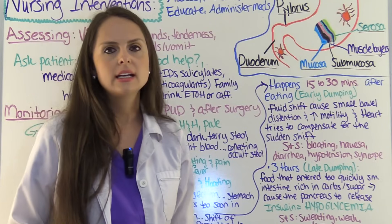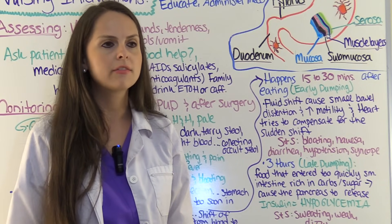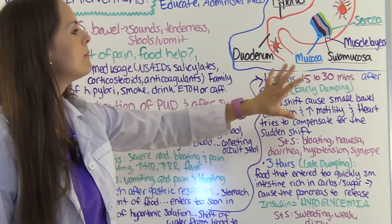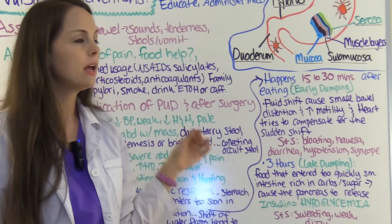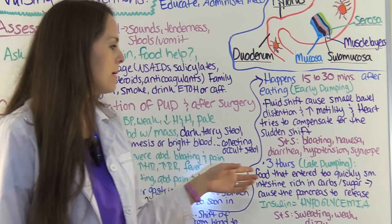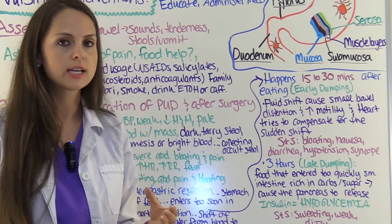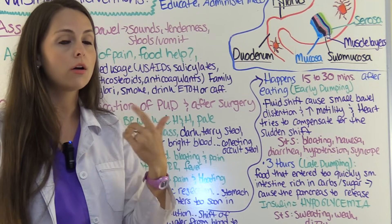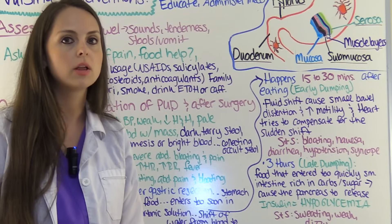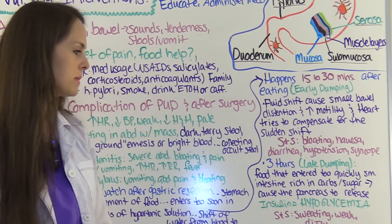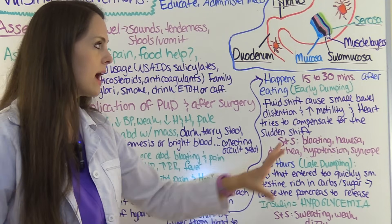The patient may report: after eating, about 30 minutes later, their stomach starts rumbling, they get diarrhea, severe bloating, feel like passing out, and blood pressure drops. Late dumping can occur three hours after eating. When food enters the small intestine rich in carbs and sugars, the pancreas releases insulin, causing a drop in blood sugar — hypoglycemia. The patient may report sweating, weakness, and dizziness about three hours after eating, which is late dumping syndrome.